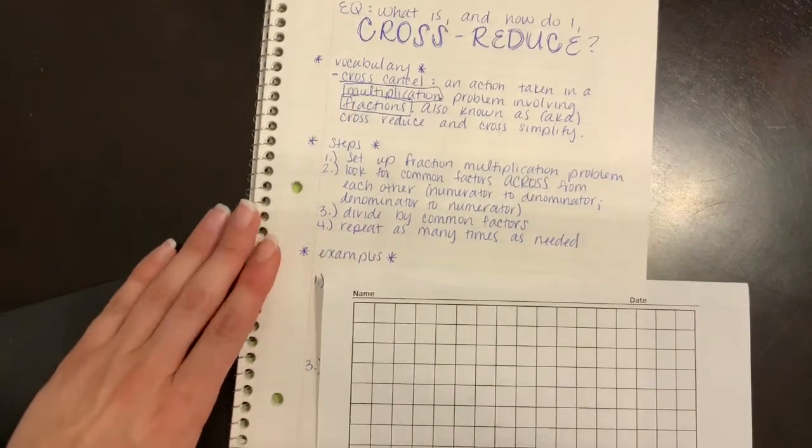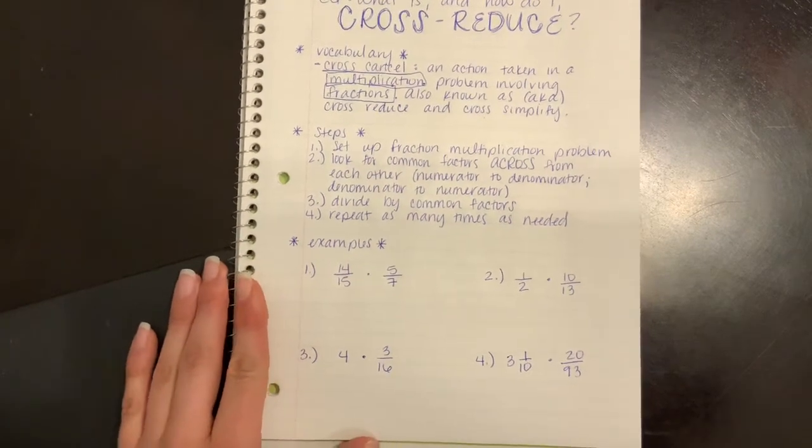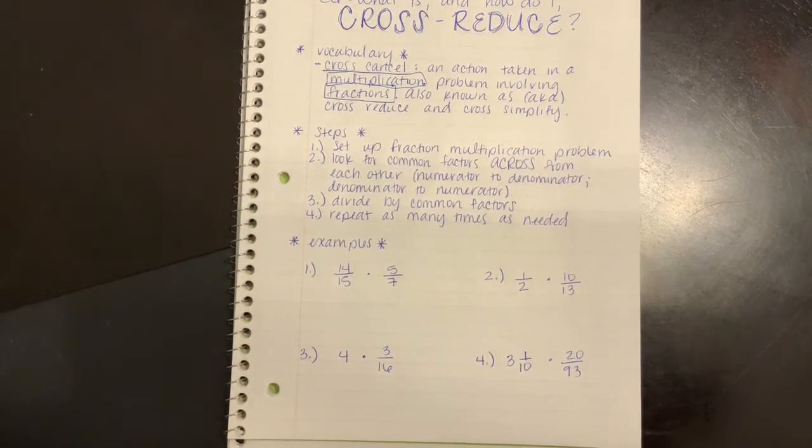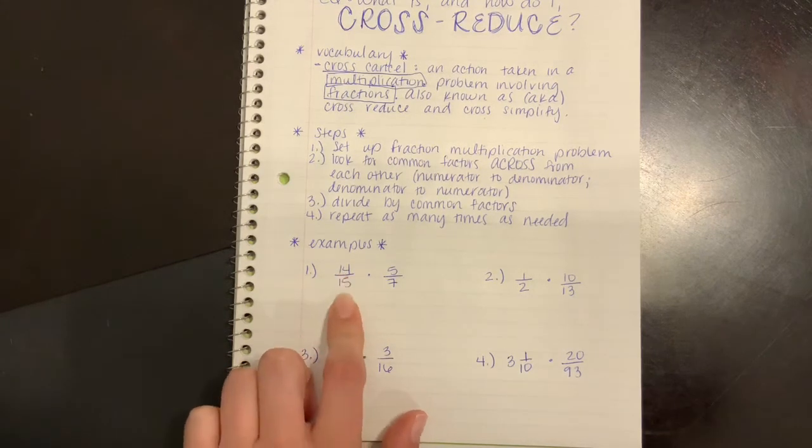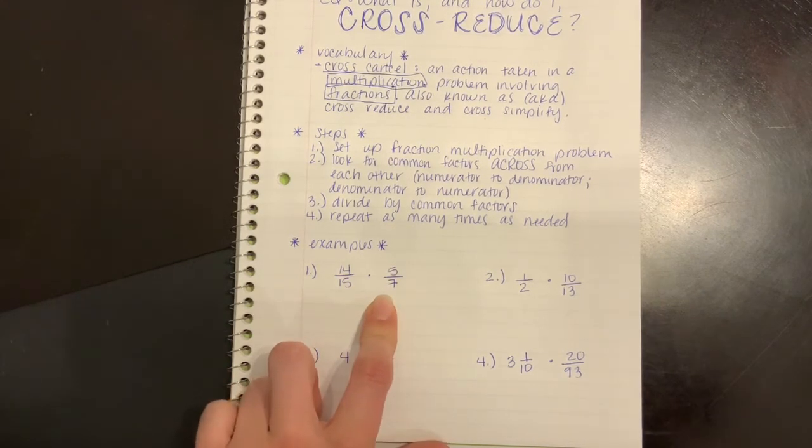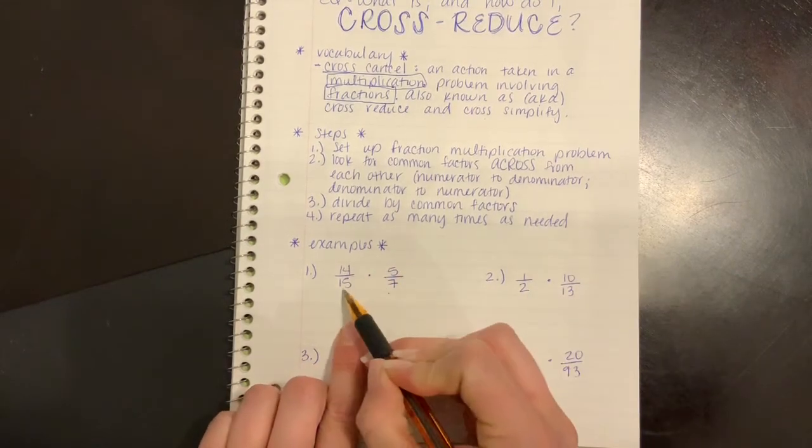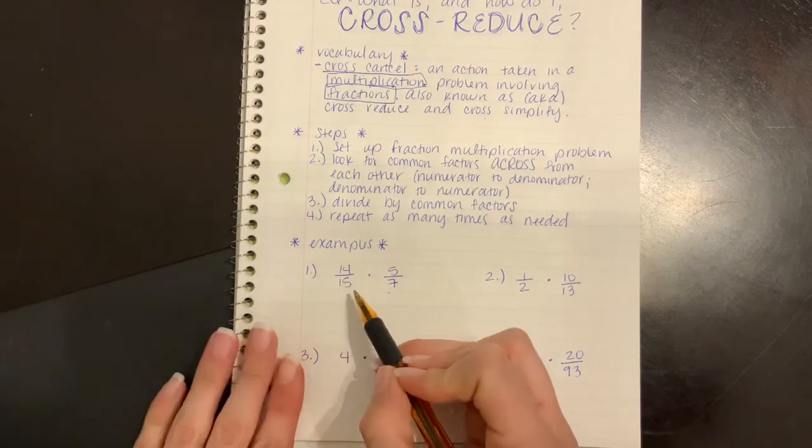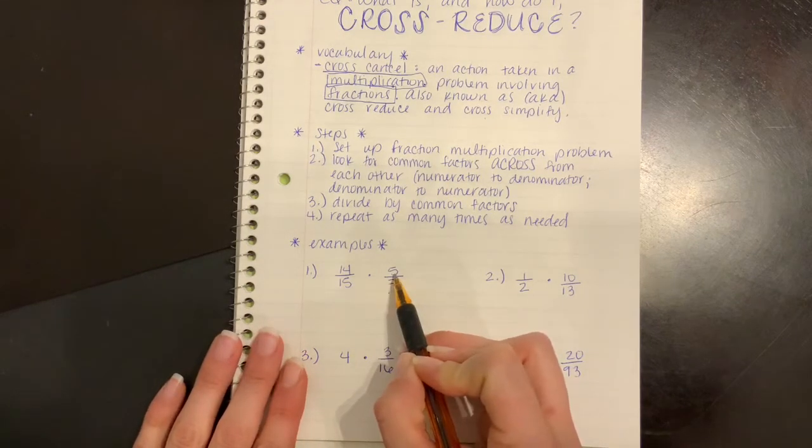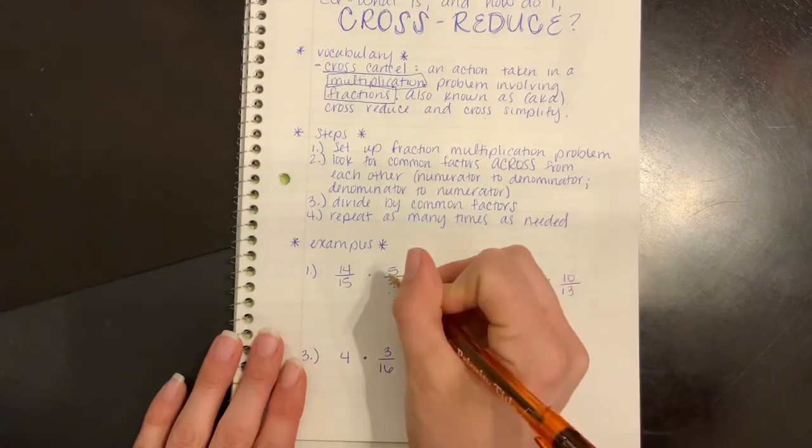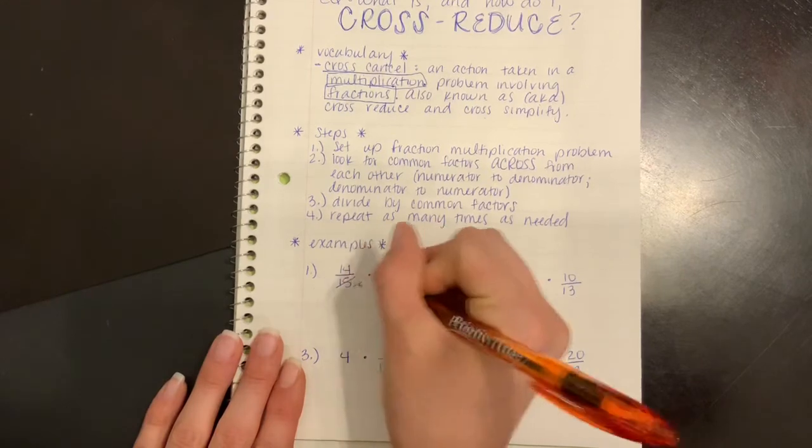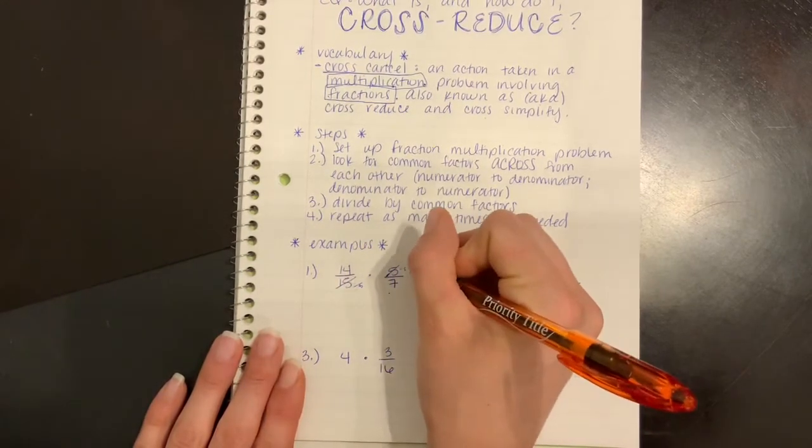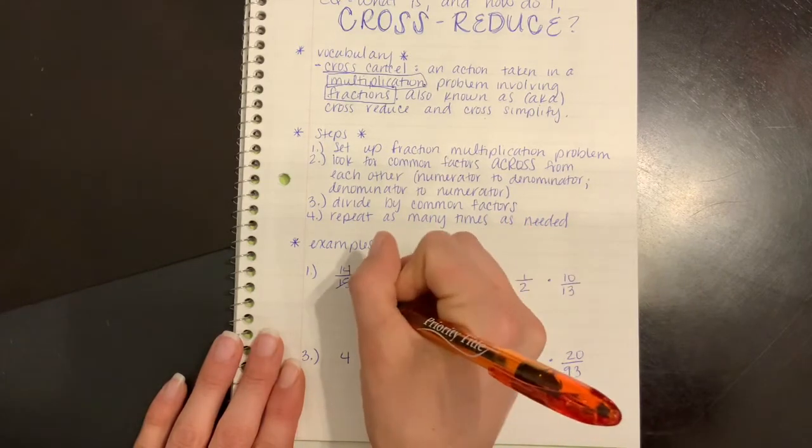We're going to go through some examples. I would like you to take all these examples down. I am going to do this all in the same color, but if you have two different colors, I suggest you color code. Example number one. I have 14/15 times 5/7. Now, I'm going to look across to see if there's any factors that they have in common. I'm looking at fifteen and five, and I know that they have a common factor of five. So, I'm going to reduce both of these by five. Five divided by five is one, and fifteen divided by five is three.